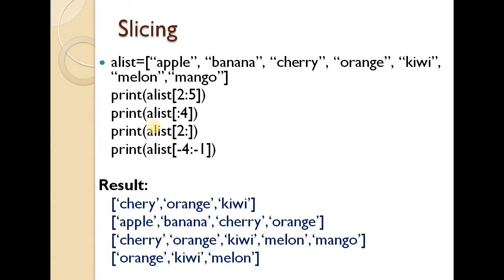Here is an example. Define a list: a = ['apple', 'banana', 'cherry', 'orange', 'kiwi', 'melon', 'mango']. Indices are 0 through 6. First, print a[2:5] — that means starting from index 2 which is 'cherry', up to but not including index 5. The result is cherry, orange, kiwi.